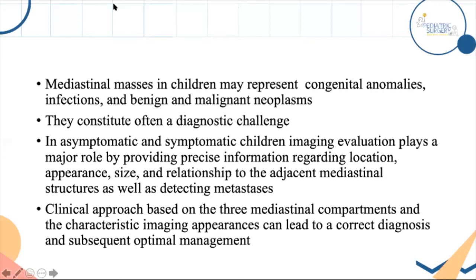Q&A: For high-risk patients with risk of airway collapse under GA, the best approach is to avoid general anesthesia and attempt diagnosis under local anesthesia — bone marrow biopsy, cervical lymph node biopsy, or pleural effusion aspiration. If none are feasible, start corticosteroids to shrink the tumor, then return for biopsy later. For asymptomatic neuroenteric cysts, surgical excision is recommended because they can grow and become infected; thoracoscopic approach is preferred unless there are neurological symptoms requiring spinal surgery involvement.